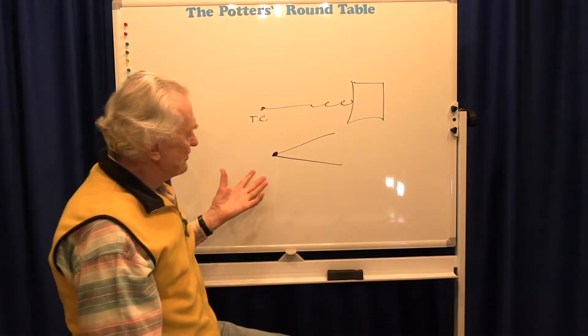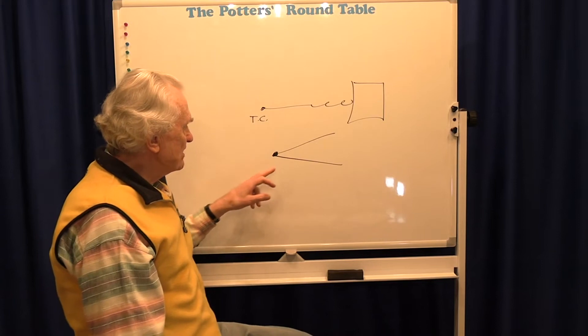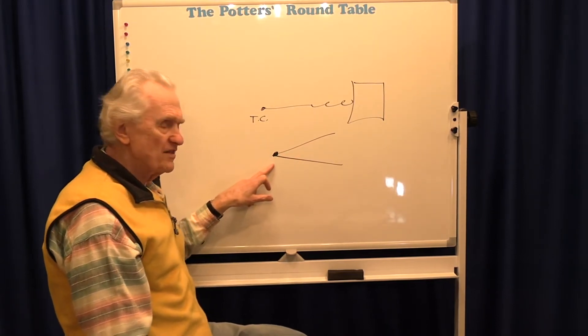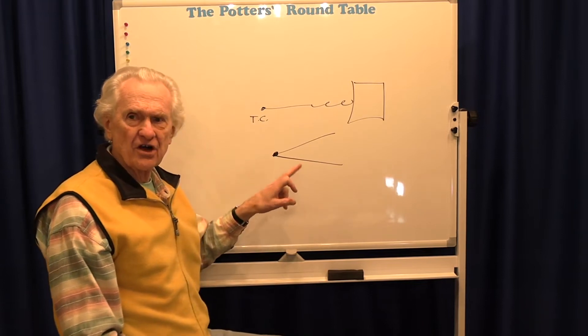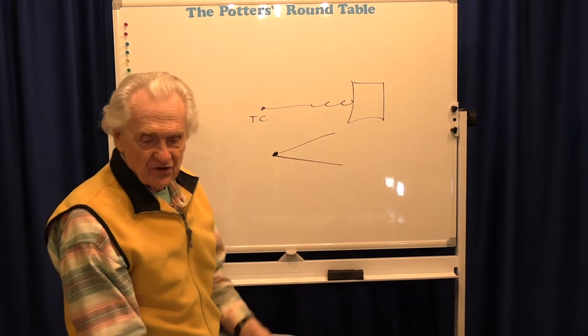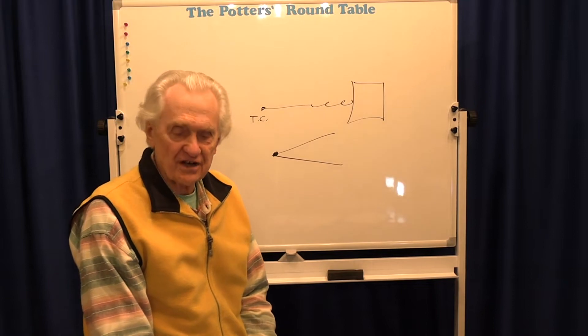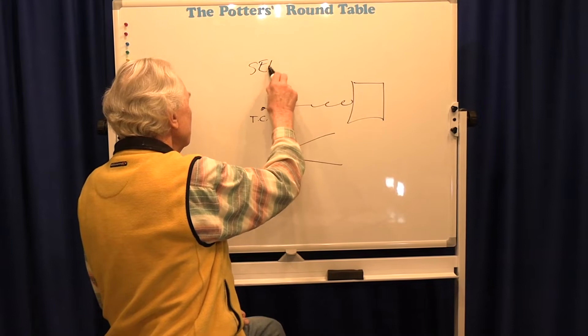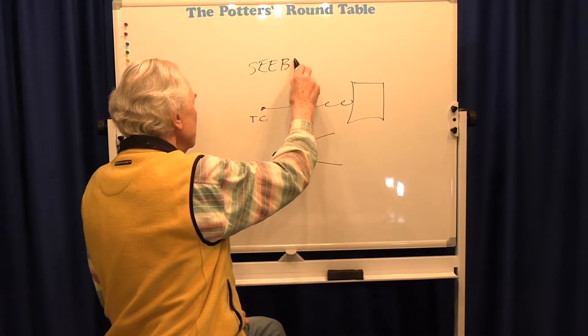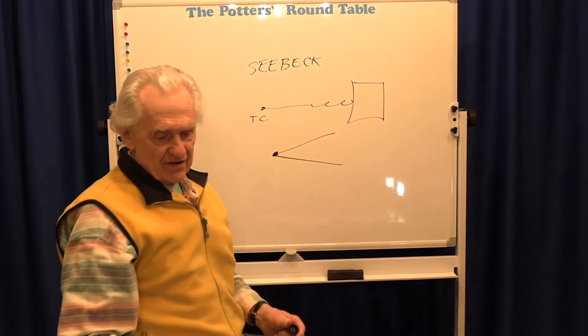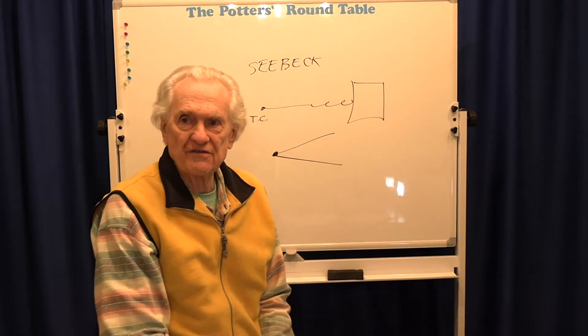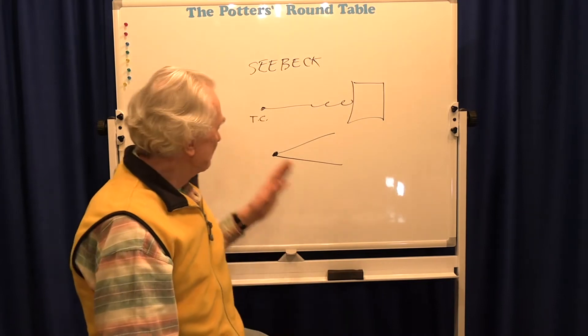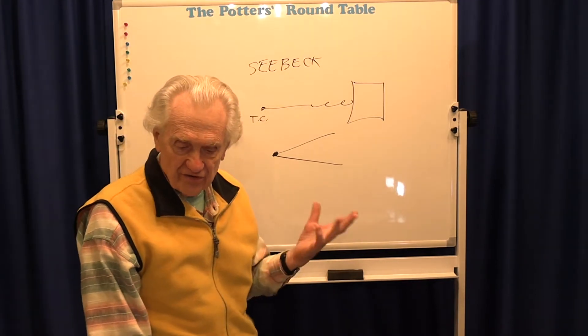The interesting thing is the principle: if I join together two metal wires of different compositions and I heat the bead, an electrical current is produced. This is known as the thermoelectric effect. It's also called the Seebeck effect, S-E-E-B-E-C-K, because this effect was discovered by a German physicist, Thomas Johann Seebeck, in 1821. He's the one that first realized this, and so we're using this principle.